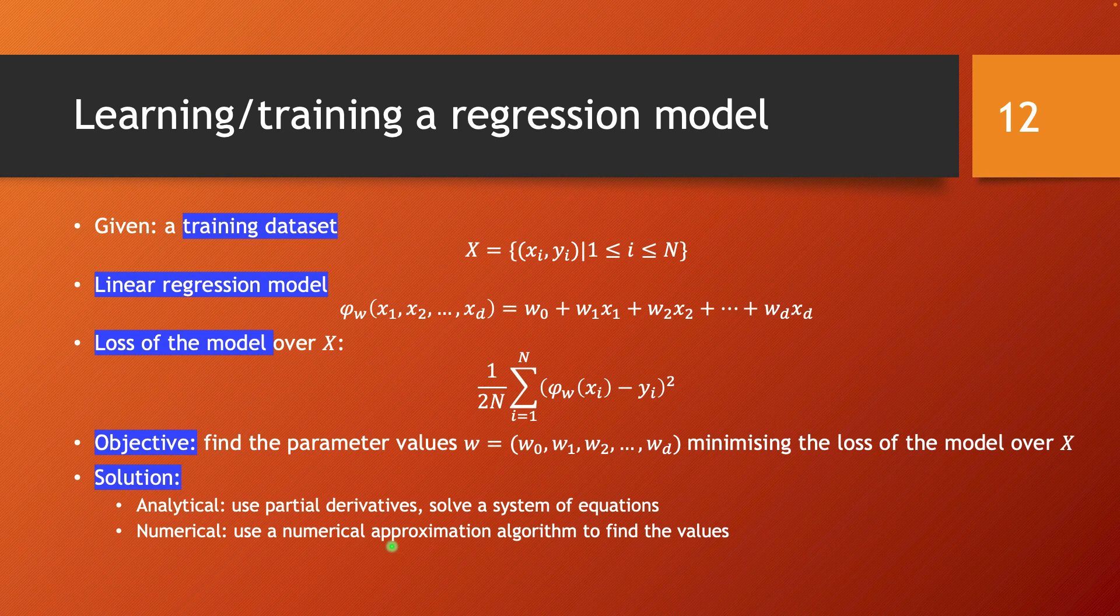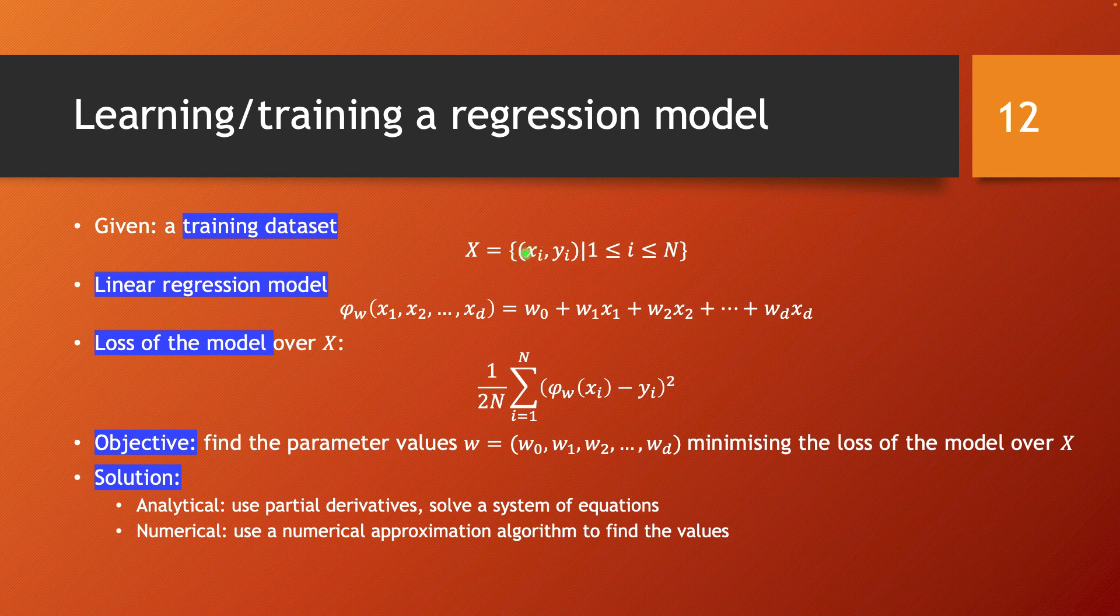In general, in a setup of learning or training a regression model, what you have is a training dataset consisting of data points, each having values over features and labels. You're looking to train a linear regression model, which has this form. It's a linear combination of the features over each data point. The objective is to minimize the loss of the model over the training dataset X. The loss of the model is this sum of the differences to power two divided by 2N. So the objective is to find the values w₀, w₁, through wd—the values of the parameters in this linear model that minimize the loss, minimize this function over this set.